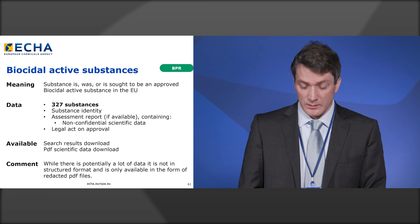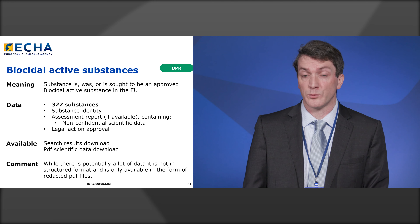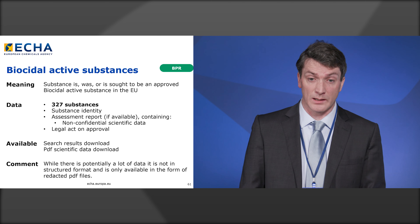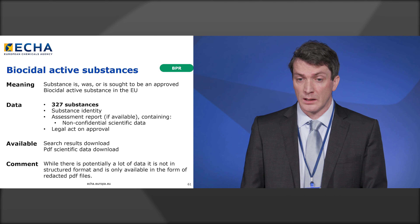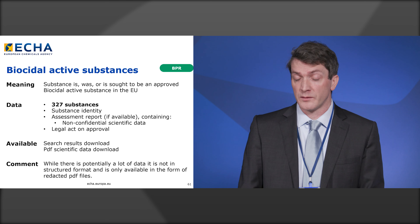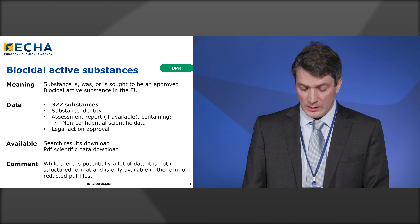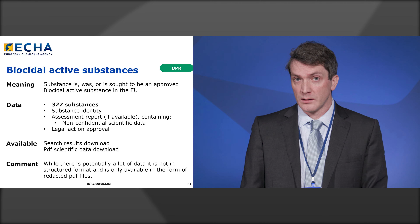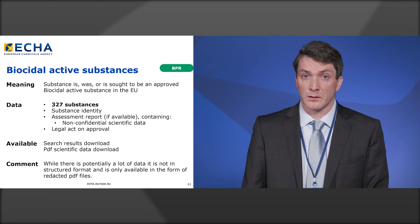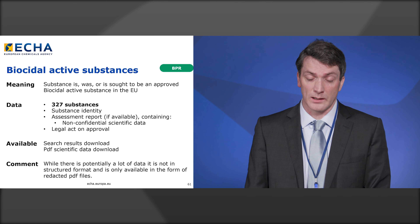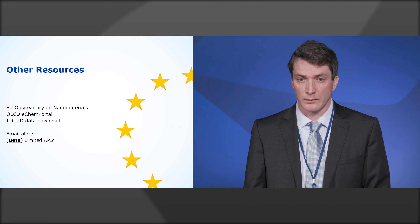For biocidal active substances — substances under the biocides regulation where a company has sought approval as a biocidal active substance — as of today there are just over 300 substances. What's available includes substance identity, a lot of non-confidential scientific data, and the legal act which approves it as a biocide if it has reached that stage. The only thing to note is that the scientific data is not submitted in a structured format but as PDF documents — 500 to 600 page redacted PDFs per biocidal active substance. We're hoping to improve this in the future.